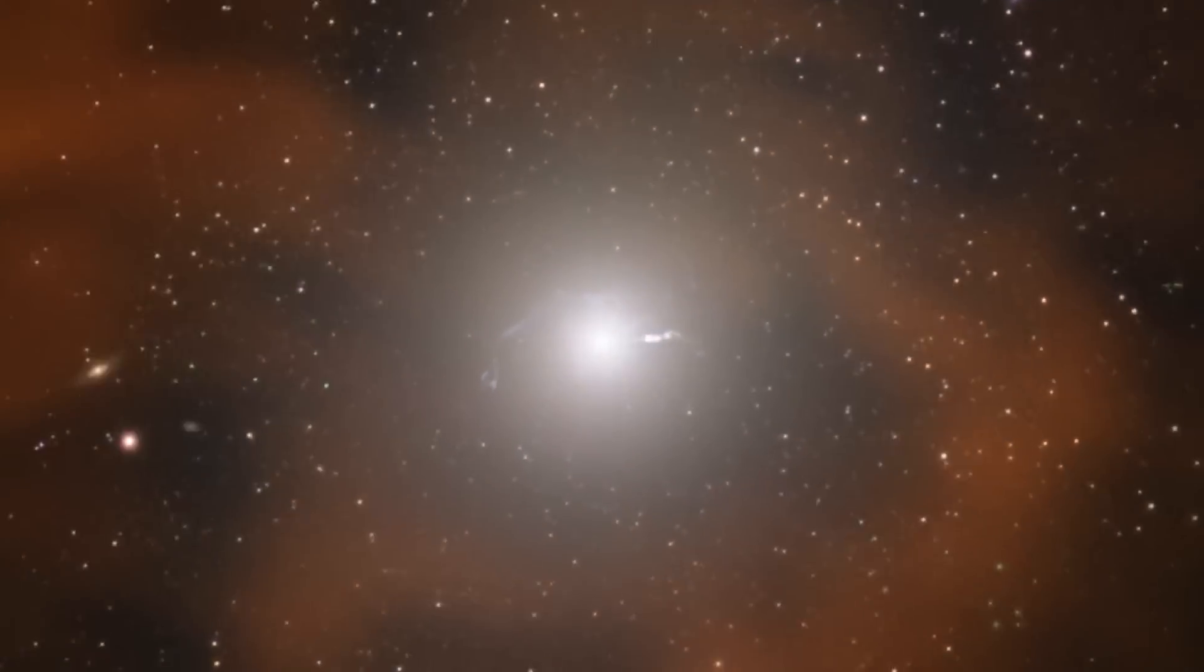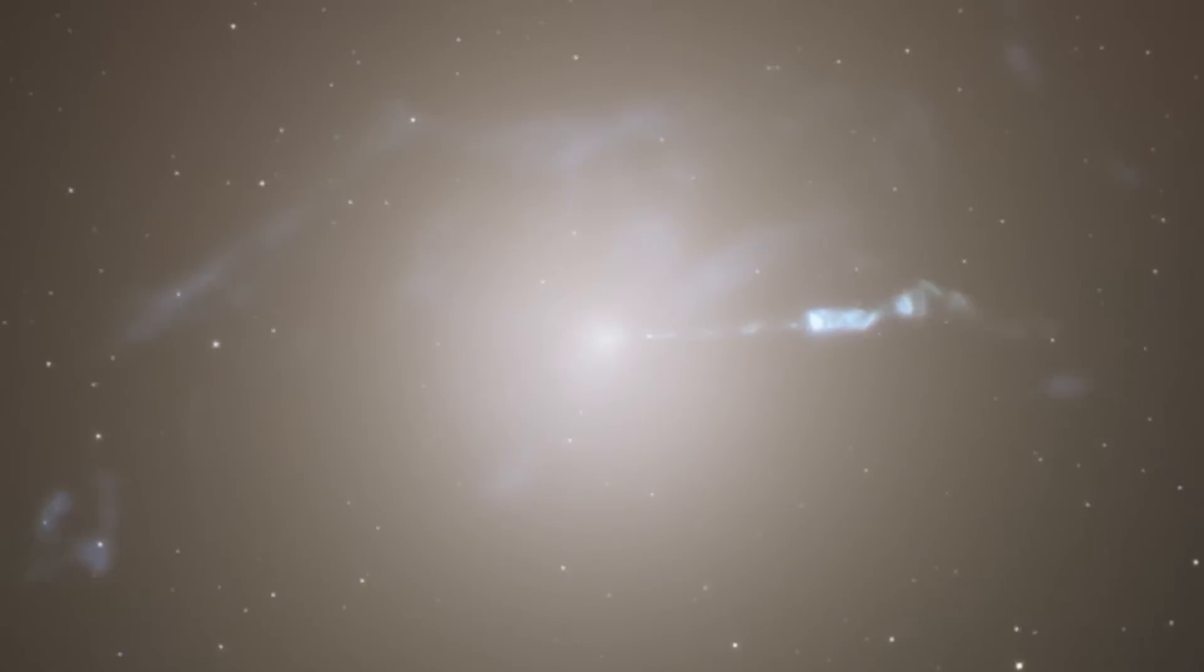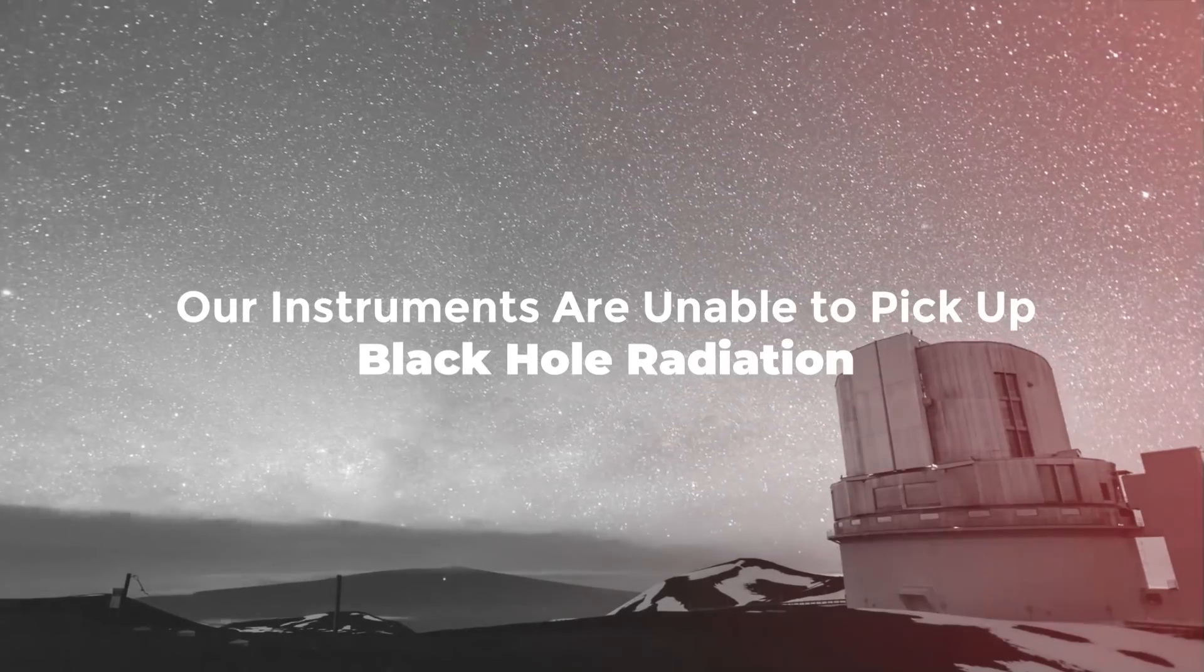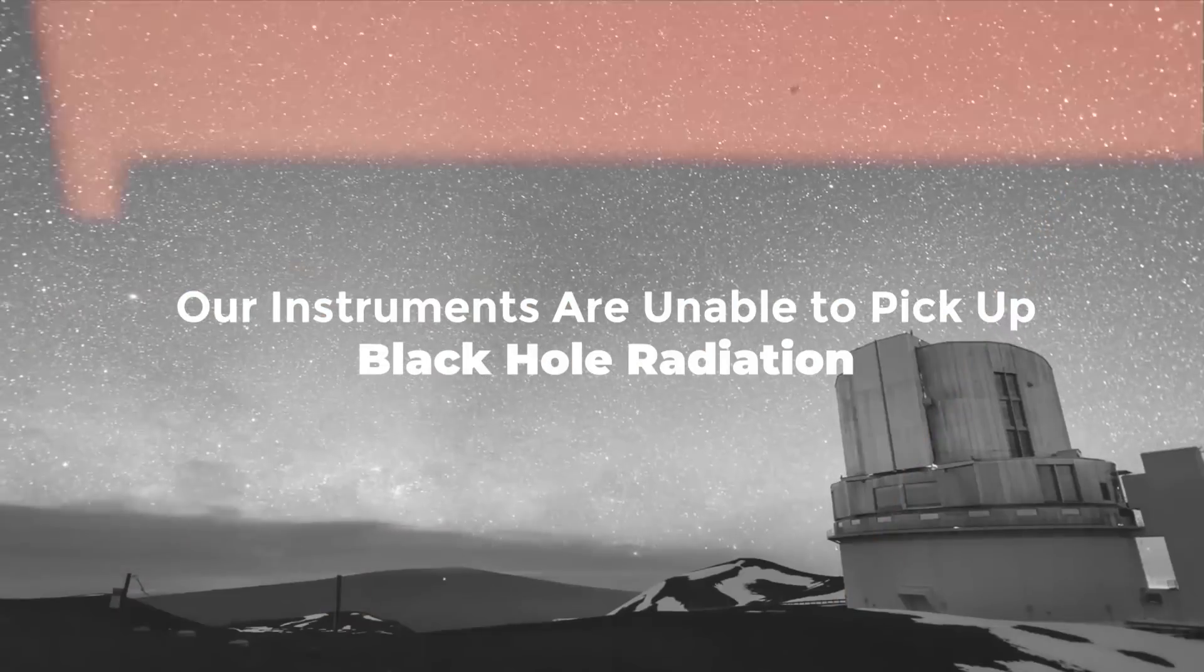The two black holes are strikingly similar, despite the fact that the black hole in our galaxy is more than a thousand times smaller and less massive than M87 star. Since it is impossible to capture a black hole in a photograph, trying to do so is pointless. Our instruments are unable to pick up the black hole radiation.